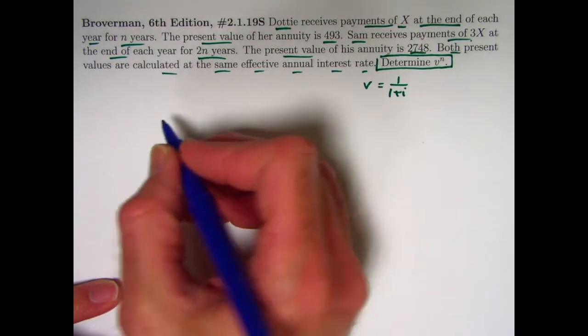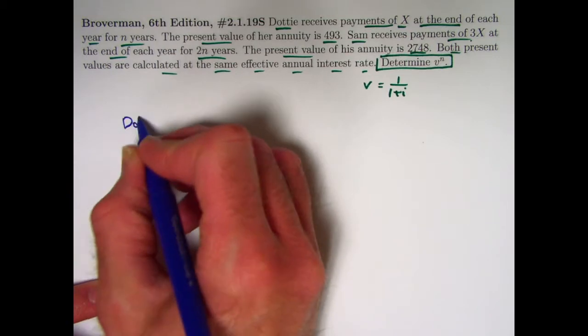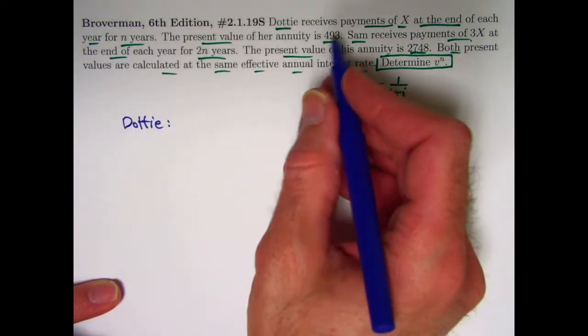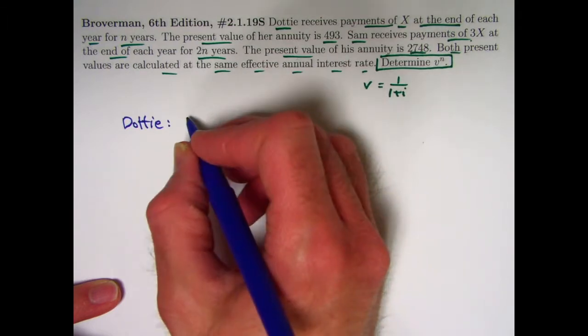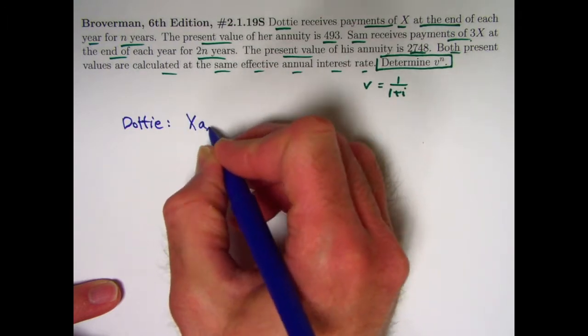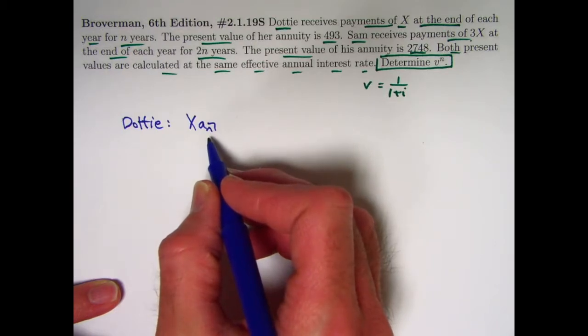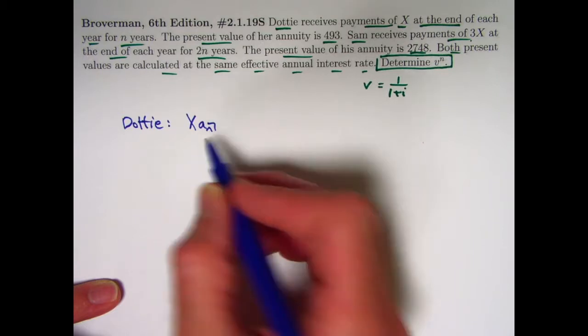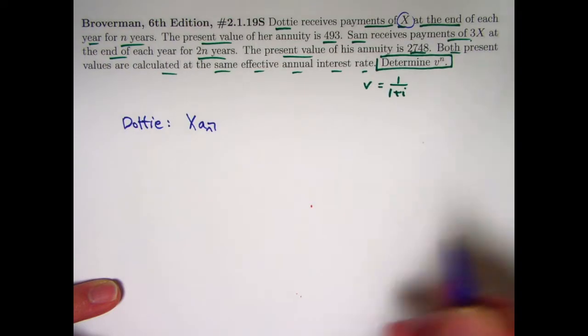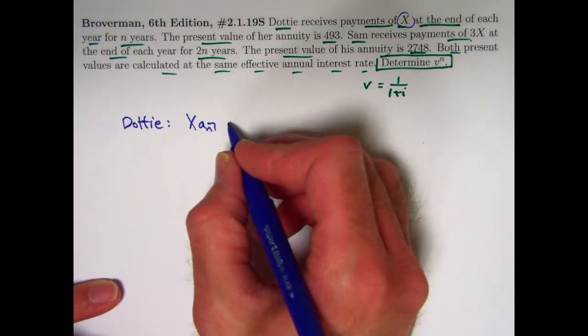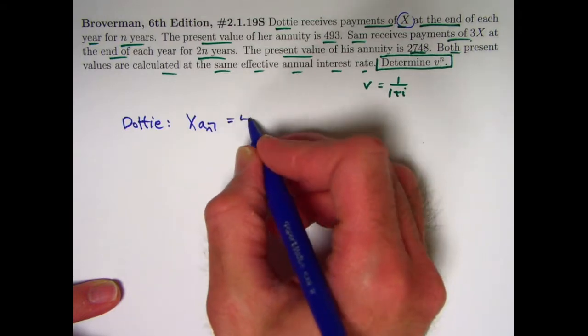Let's write down what we know here in equation form. We've got Dottie. Her annuity, the present value of her annuity, can be represented as x times a n. A n is the symbol for the present value of an annuity immediate, with payments of 1 at the end of every year for n years, based on a certain interest rate. And x is the amount that she actually gets. So x times a n is the present value of her annuity immediate. That must equal what's given, 493.